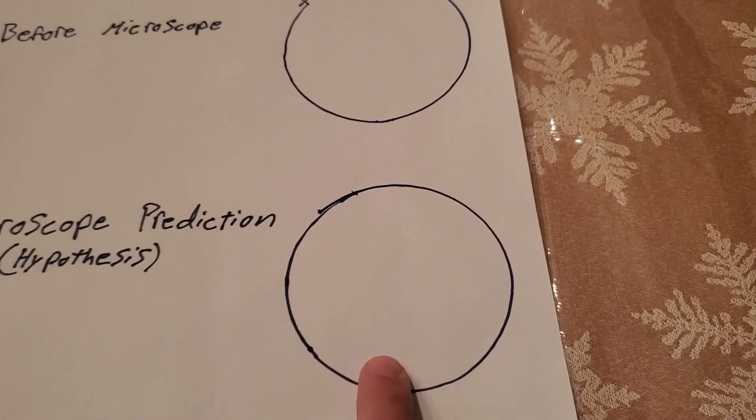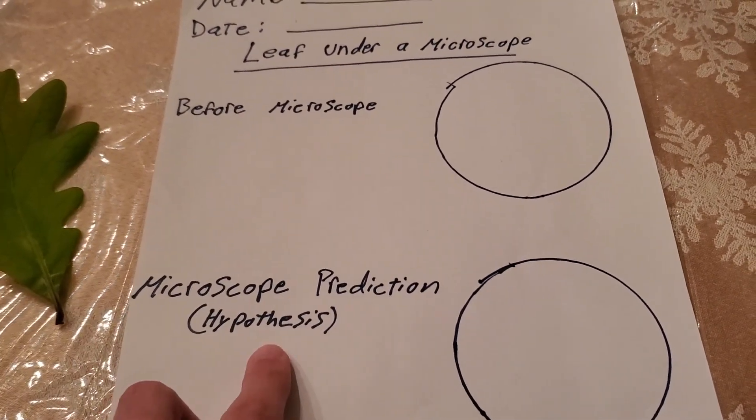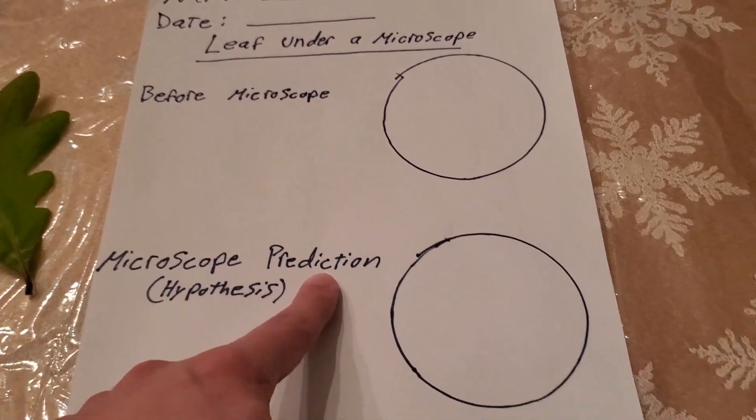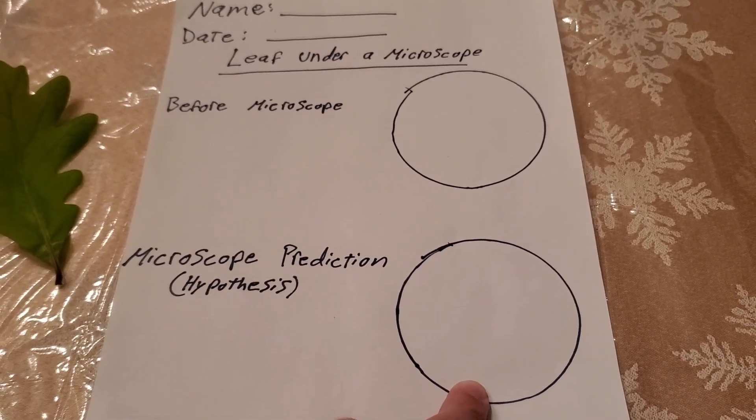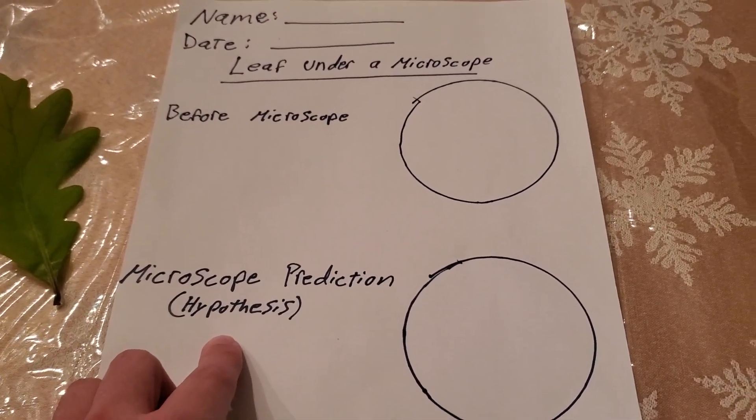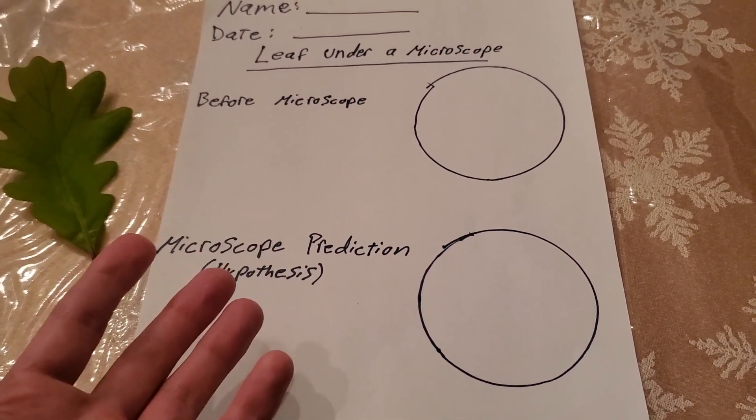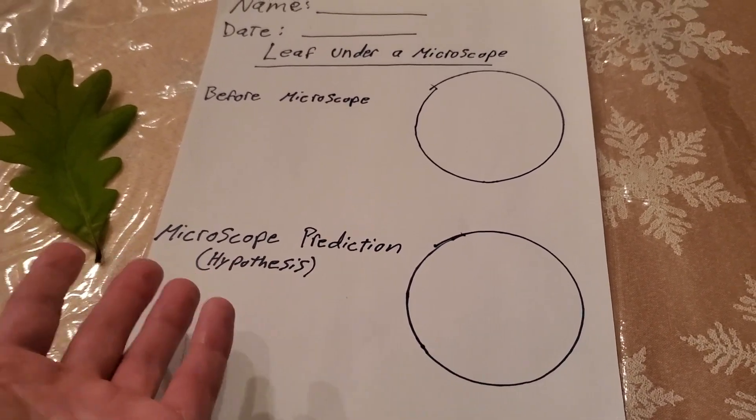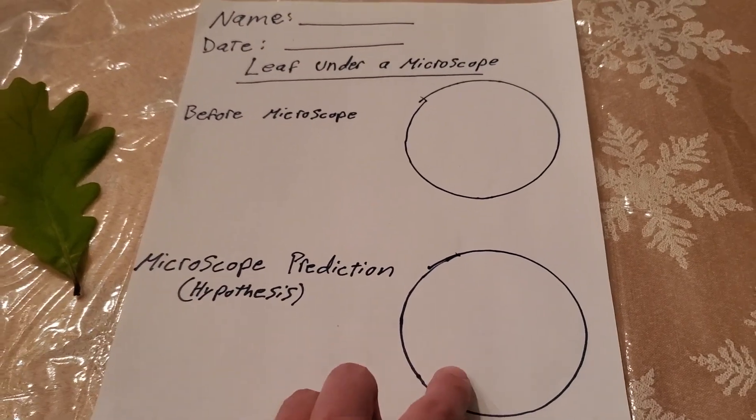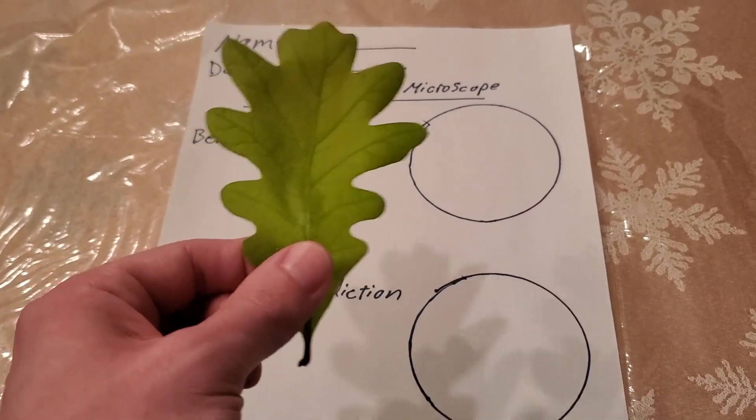And you're going to draw for me what you think this leaf will look like under a microscope. And the cool thing about a hypothesis or prediction is there's no wrong answers. It's the same way as if we were reading a story. We read stories all the time in class and we make predictions about how the story is going to end. And the cool thing about reading stories and making predictions is you can't be wrong. There's no wrong answer because you're just taking a fun guess. So right here you're going to draw me your fun guess about what you think a leaf will look like when we put it under a microscope. And we really zoom in, zoom in, and try to see what it's going to look like.